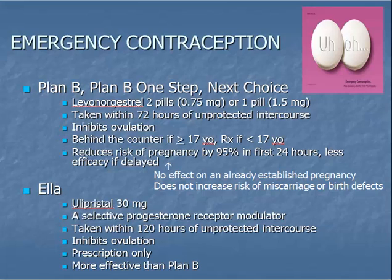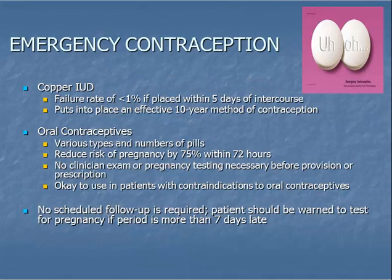Emergency contraception is available for women who either did not use contraception during a recent episode of intercourse, or whose contraceptive method failed, such as with condom breakage. Emergency contraception is not intended to be used regularly. Plan B is a progestin taken within 72 hours of unprotected intercourse; it is available without a prescription for women aged 17 years and older. Ulipristal is a selective progesterone receptor modulator effective up to 5 days after unprotected intercourse and is available by prescription. The most effective method of emergency contraception is placement of a copper IUD, which is over 99% effective if placed within 5 days after unprotected intercourse. High doses of oral contraceptives can also be used for emergency contraception.